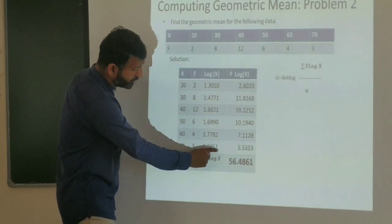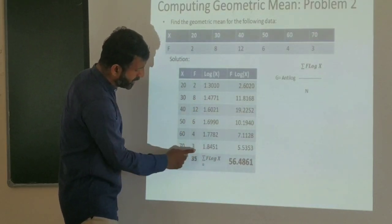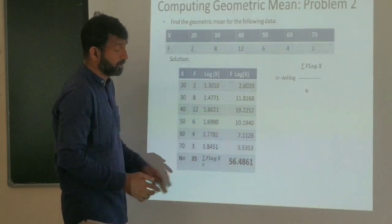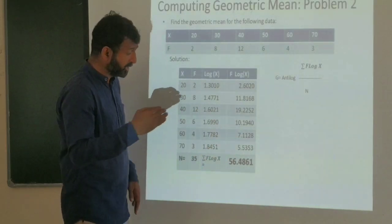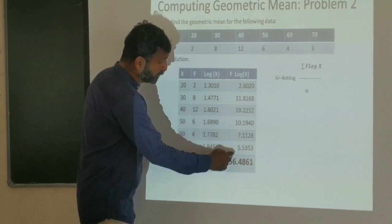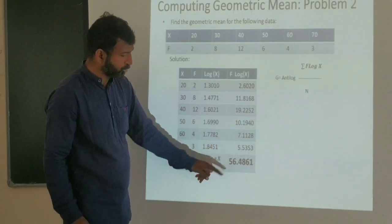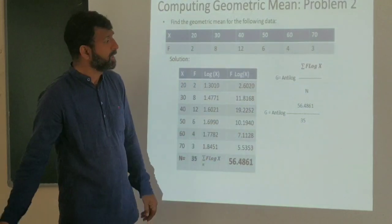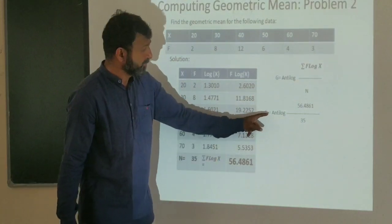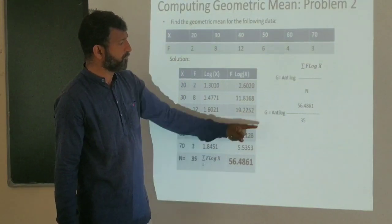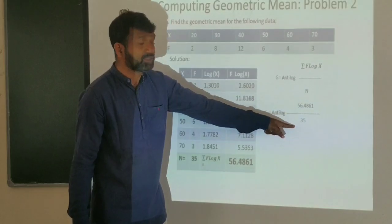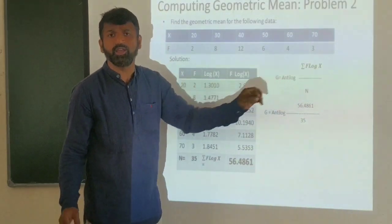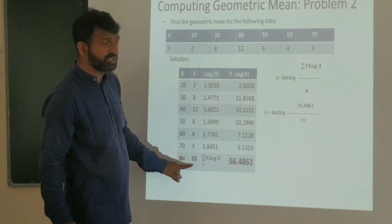The corresponding f times log x values are computed for each row. For example, log 30 multiplied by frequency 8 gives 1.8451 times 8. The total of all f times log x values equals 56.4861, and the total frequency N is 35.